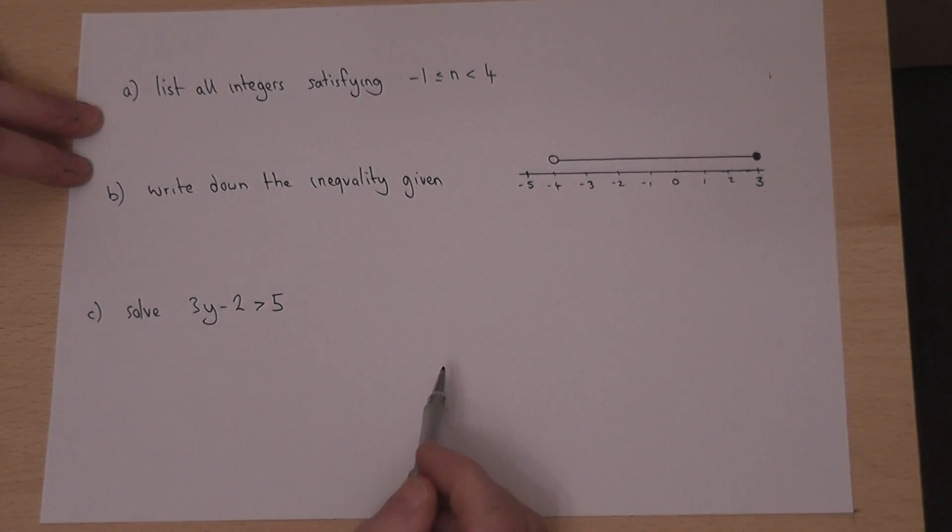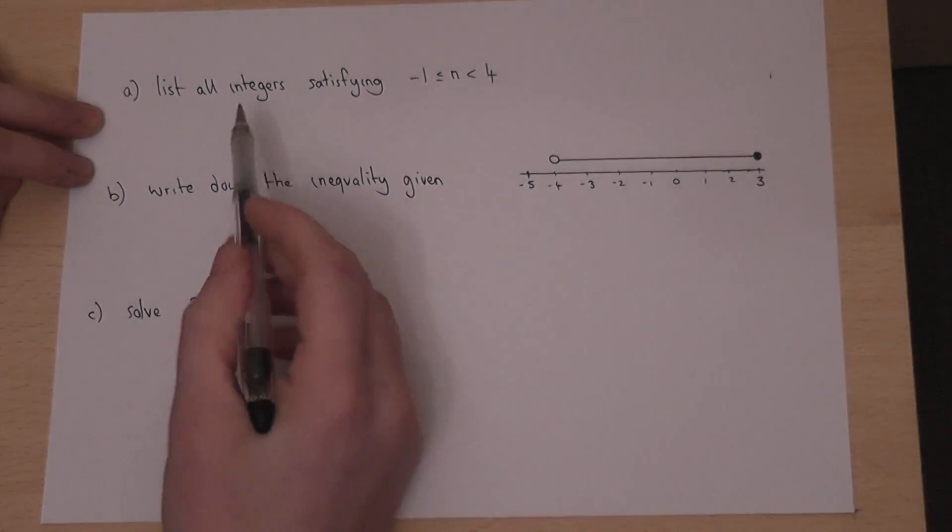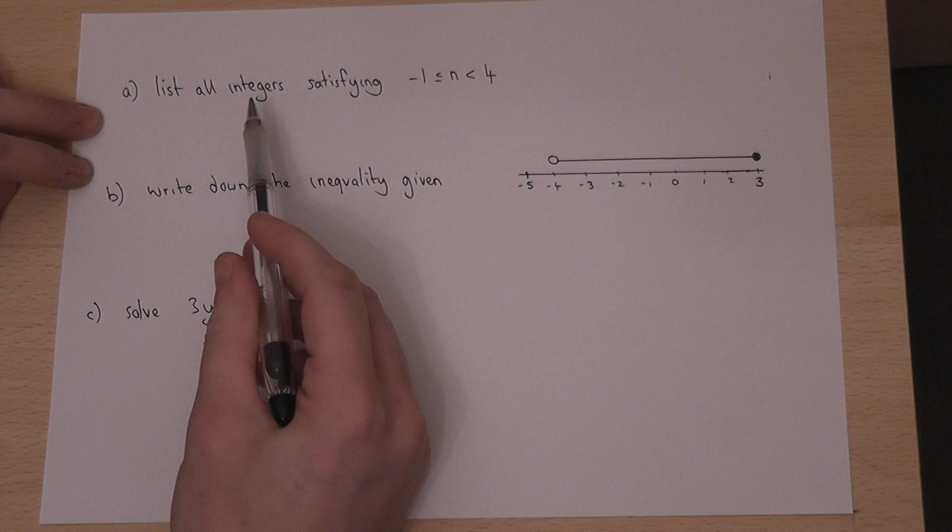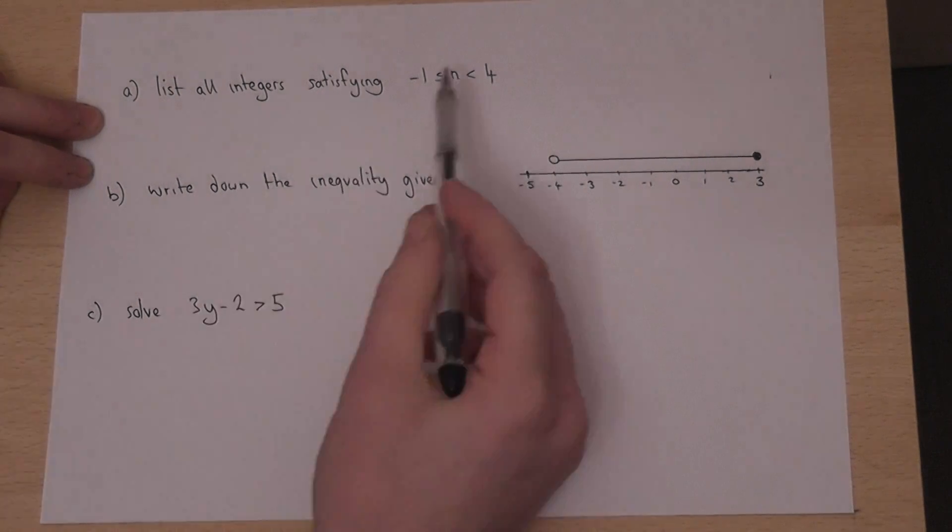This video looks at three typical inequality type questions you might be faced with in the exam. In the first one, we're asked to list all integers, i.e. whole numbers, which satisfy a given inequality.